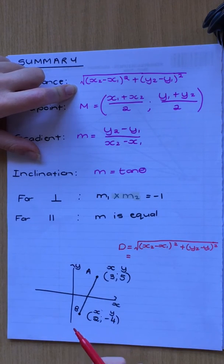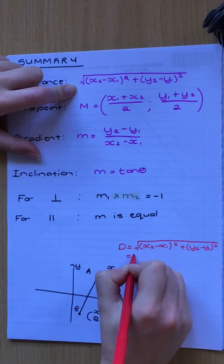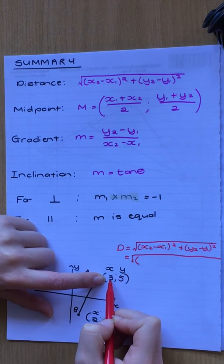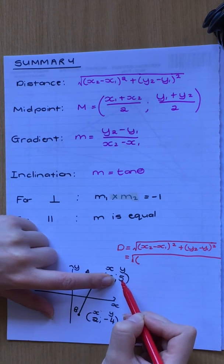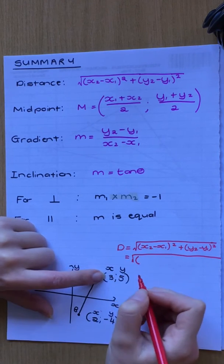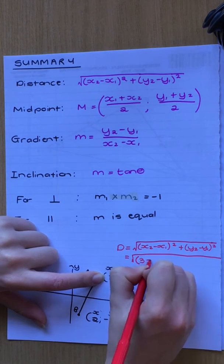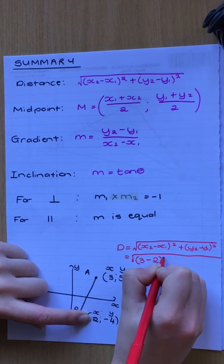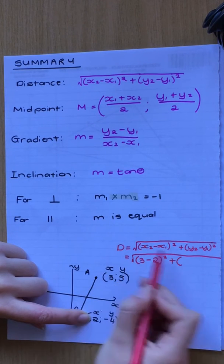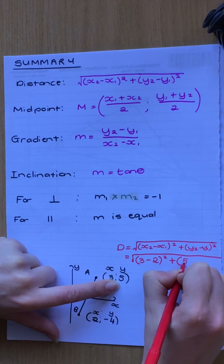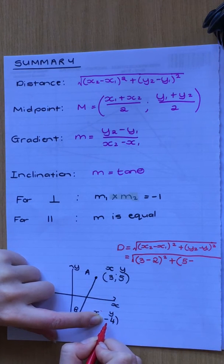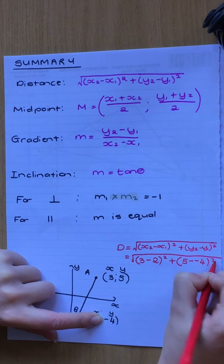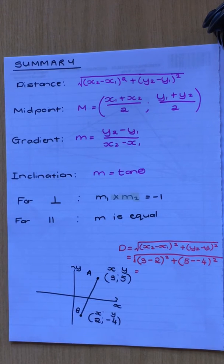If I'm going to use these two points to fill in this formula, and I choose this point and make it x2, so x2 is 3 minus x1 which is negative 2, squared plus — now I started with this as x2, so I must go back and make this y2. So it's 5 minus this y1, which is negative 4. Remember, minus minus 4 becomes a plus. You can plug that whole thing into your calculator and you will get an answer. That is quite simple.